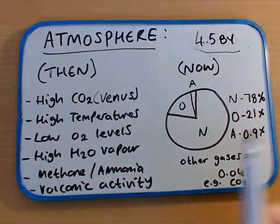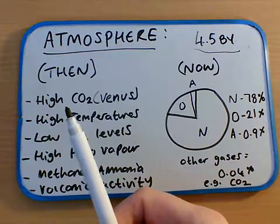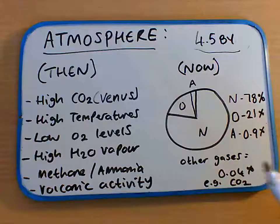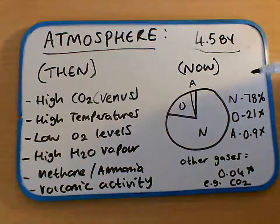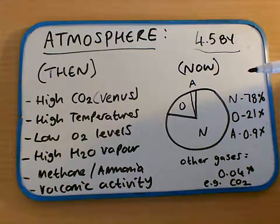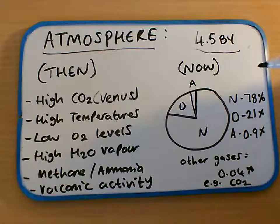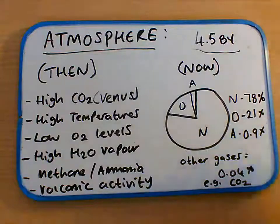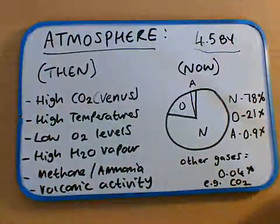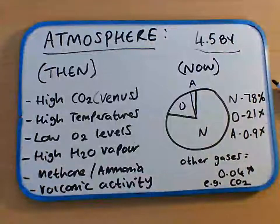So if you think about the massive change from high levels of carbon dioxide 4.5 billion years ago to today only being 0.04%, that's mostly due to those photosynthetic organisms and early plants. Because they locked up a lot of the carbon dioxide in their biomass, in their material, and that allowed other organisms to actually evolve. So there we go — a quick look at the change of gases in the Earth's atmosphere from its early history to today.